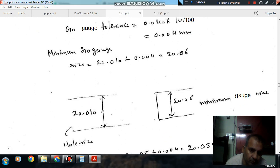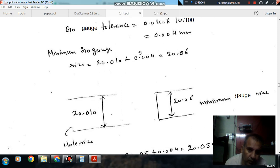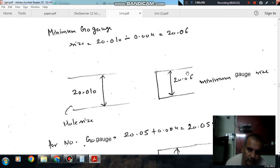Go gauge means this is your hole and Go gauge should pass through that hole. So its size should be less than the size of hole. And minimum size of this Go gauge will be size of hole minus Go gauge tolerance. So that will be 20.06, so that can pass through this hole.